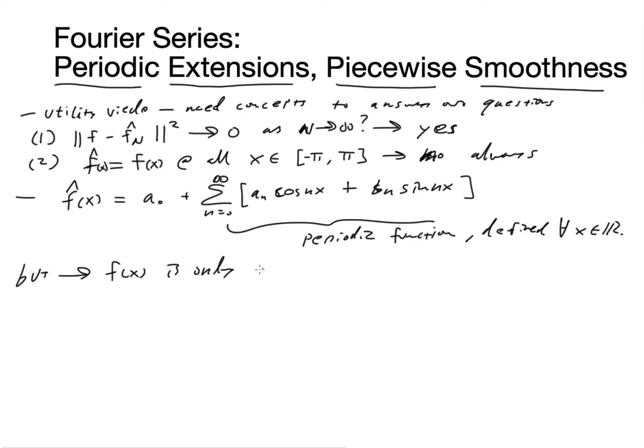It's a periodic function, and it's defined for all x in the real numbers. But f of x is only defined for x on the interval negative π to π, and f may not be periodic.